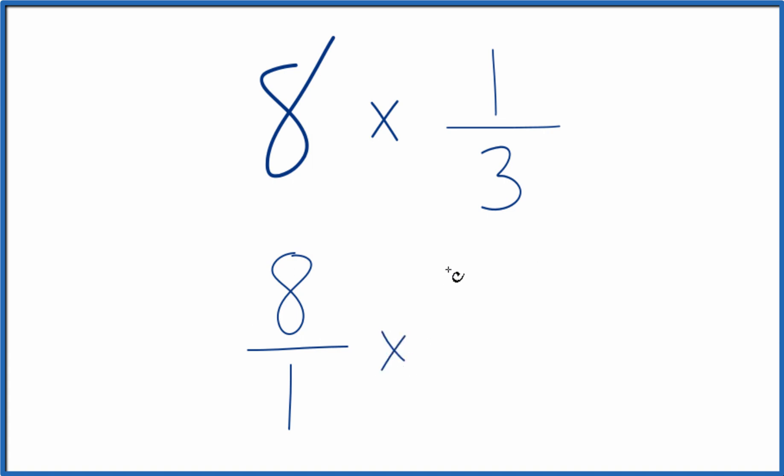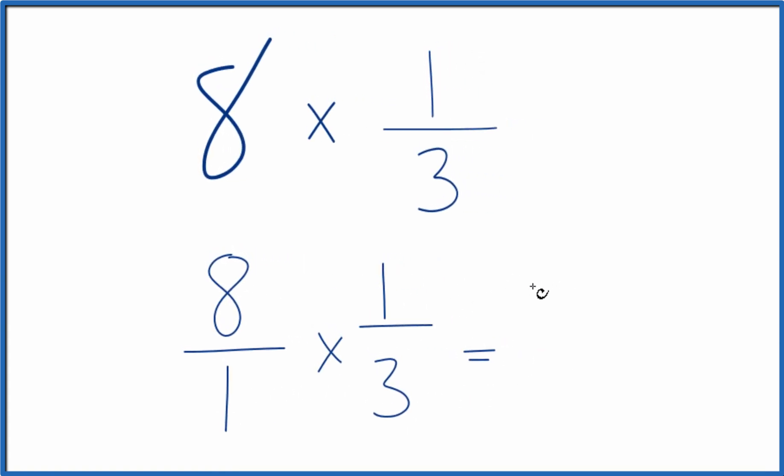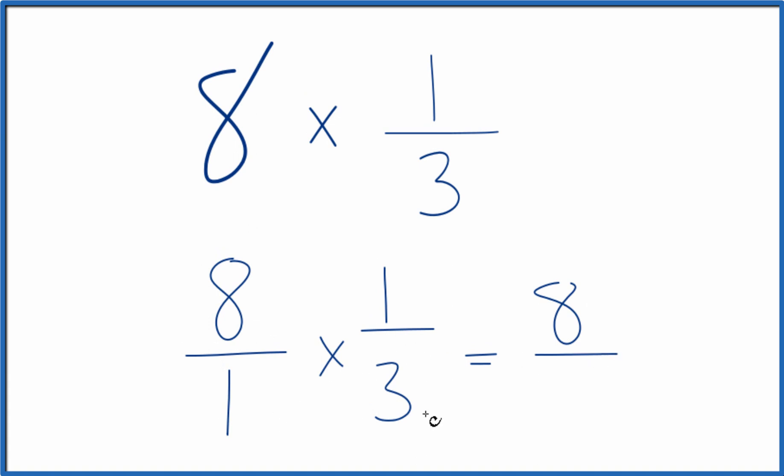We take that fraction and multiply it times 1/3. And now, with fractions, we multiply the numerators, then the denominators. So 8 times 1, that equals 8. 1 times 3, that equals 3.